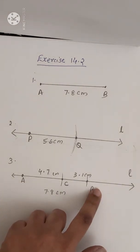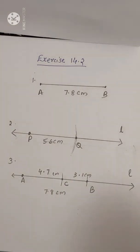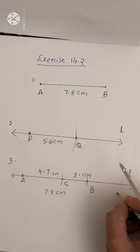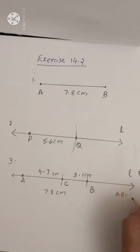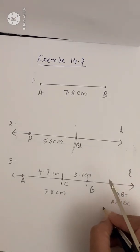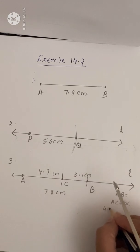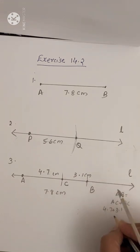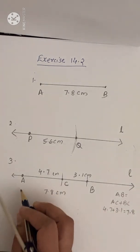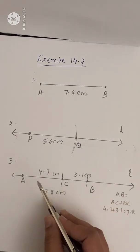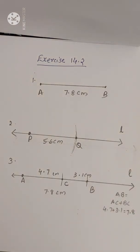We can check your answer by adding. Because AB equals AC plus BC. AC is 4.7 plus BC is 3.1, which is equal to 7.8. So we get 7.8 — thus our answer is correct.